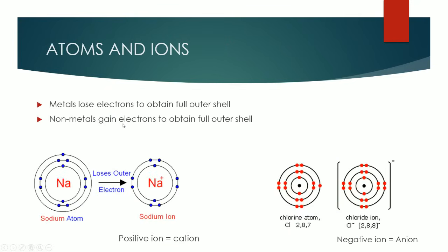So the first thing we're going to be looking at is the distinction between atoms and ions. Metals lose electrons to obtain a full outer shell, and non-metals gain electrons to obtain a full outer shell. For example, sodium is in group 1, so it's got 1 electron in its outer shell. All it needs to do is lose that 1 electron to gain a full outer shell, because that outer shell simply disappears, leaving it with 2 shells where the outer shell now has a full set of electrons — 8 electrons in the shell.